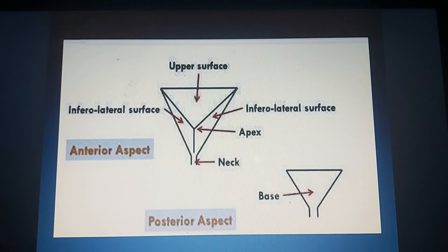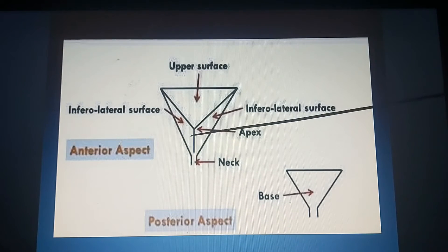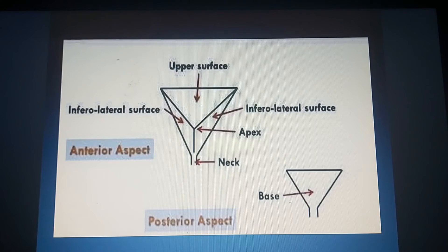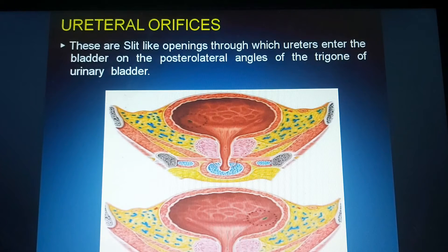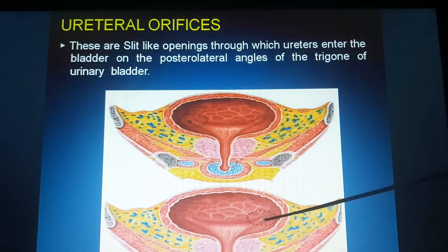These are the surfaces and borders of the urinary bladder — the posterior border, the two lateral borders, the anterior border, and the right and left inferior lateral surfaces. The ureteral orifices are slit-like openings through which the ureters enter the bladder at the posterolateral angles of the trigone of the urinary bladder.